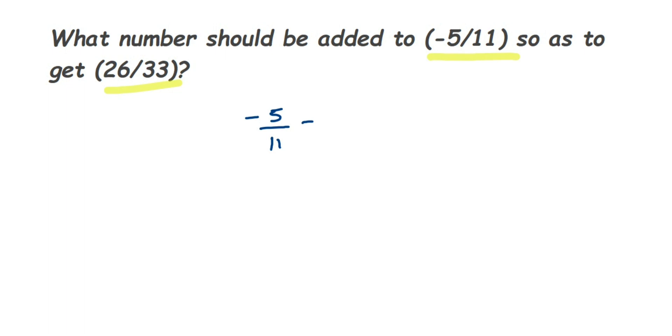So we have -5/11, to this what should we add so that the answer will be 26/33? You can see that this is an unknown number to us. We have to find out that, so always take unknown number as a variable. We're going to take a variable here, x, and then we're going to solve it. So let the number to be added be equal to x.